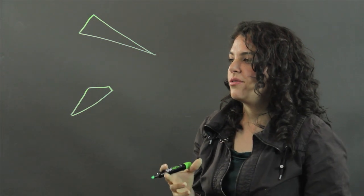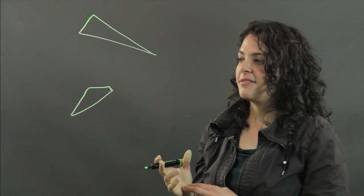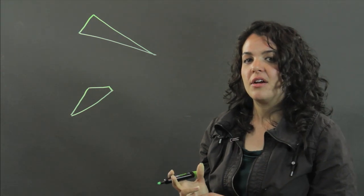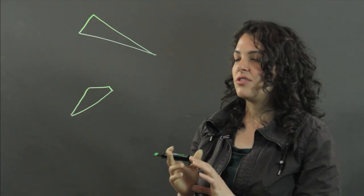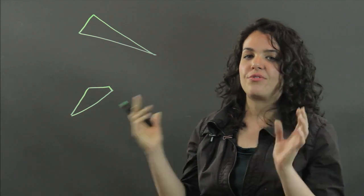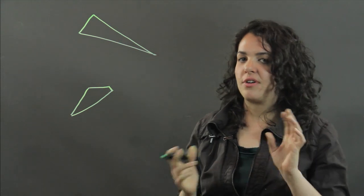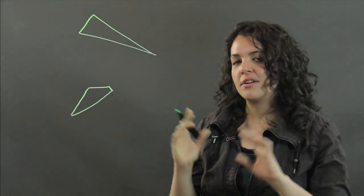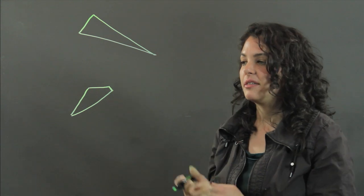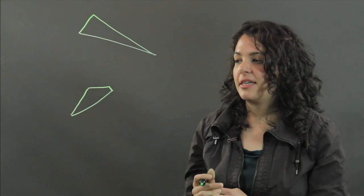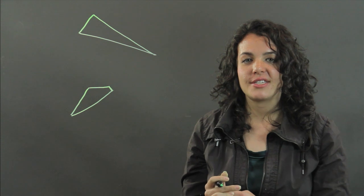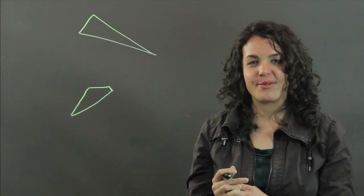So in review, to have something be scalene, all of its sides are different values — they're not equal, none are equal to each other. That's how you figure out if a quadrilateral is scalene. Thanks for watching.